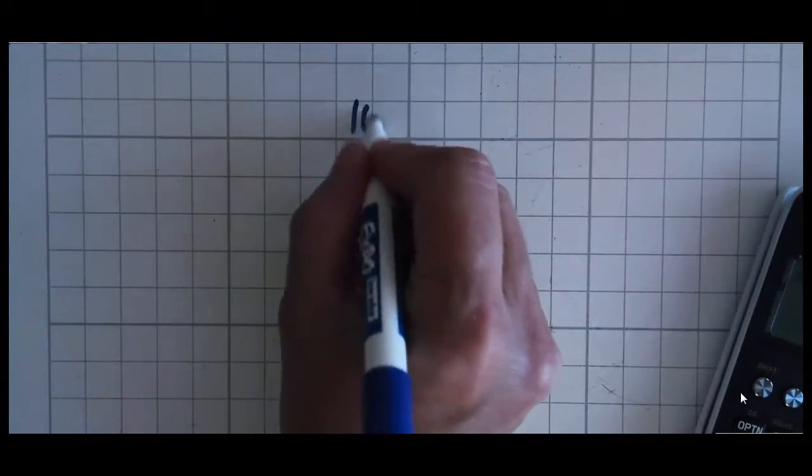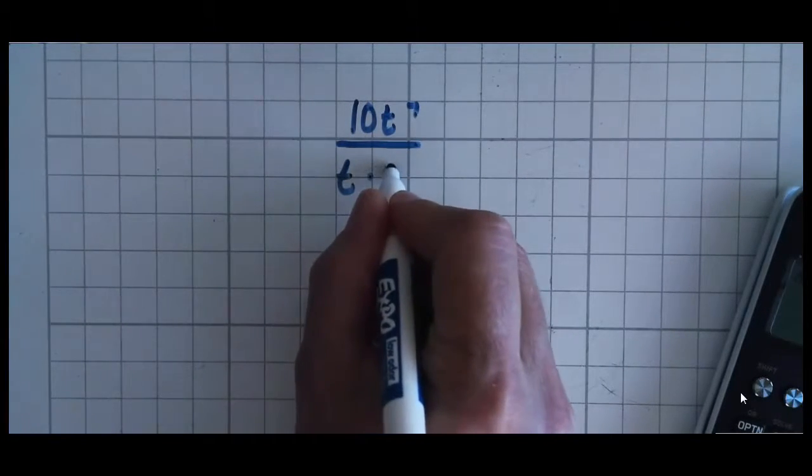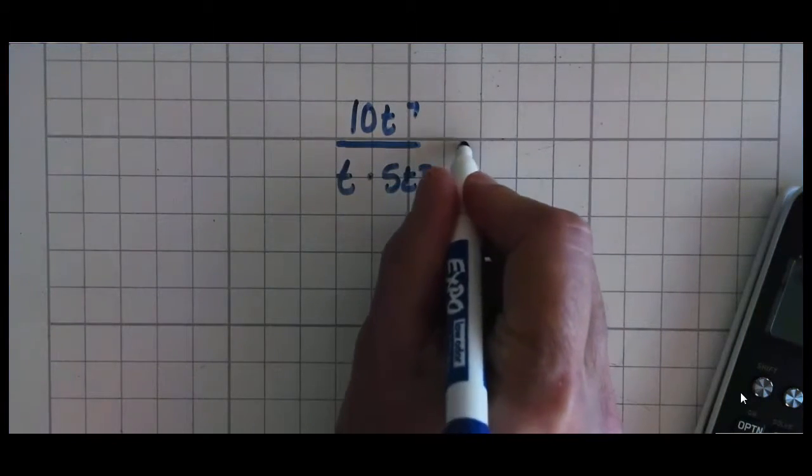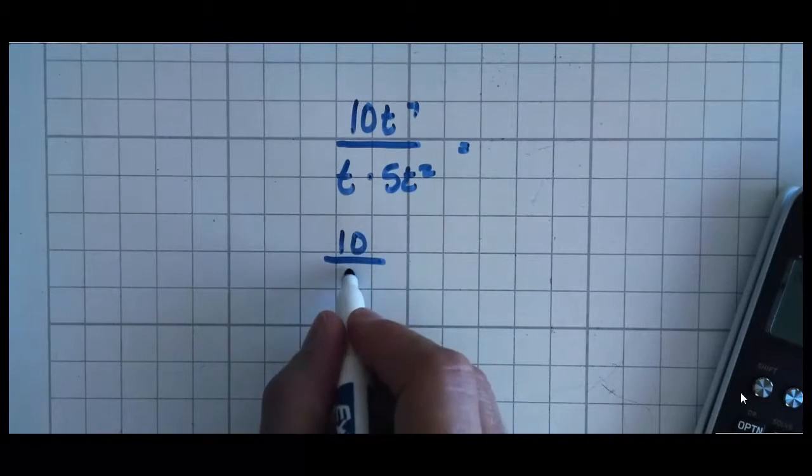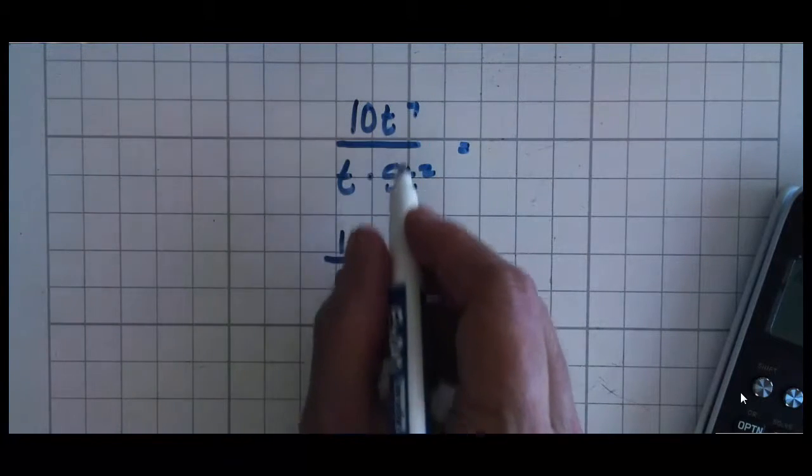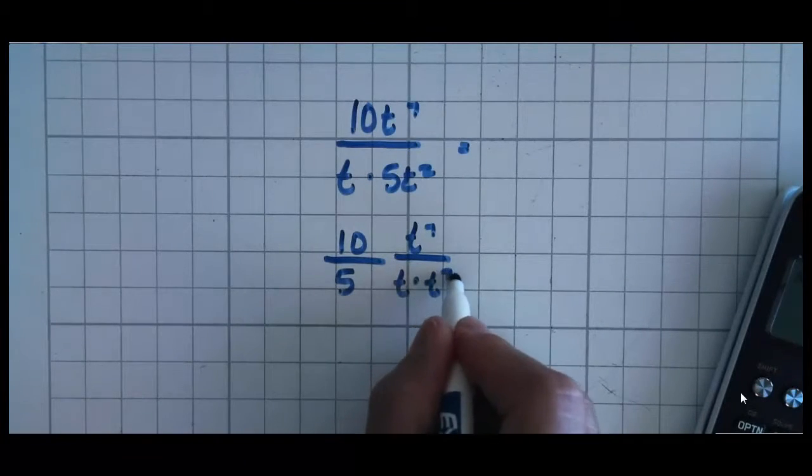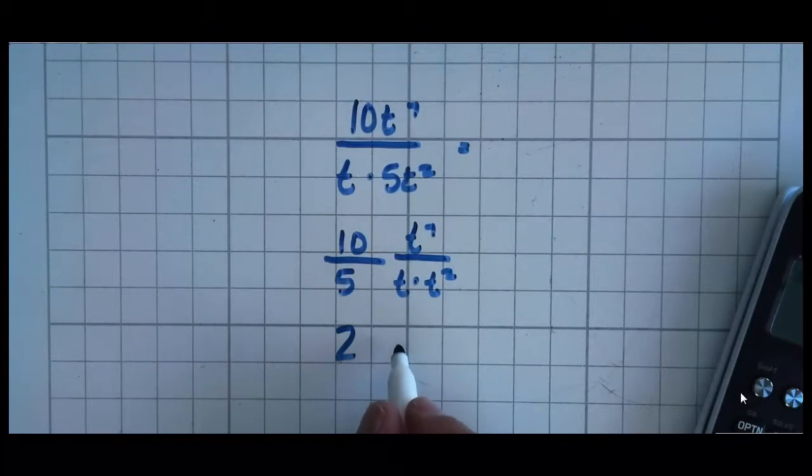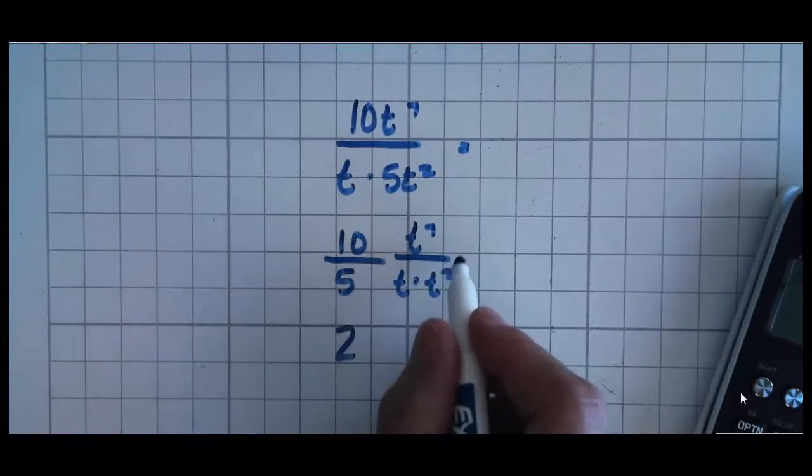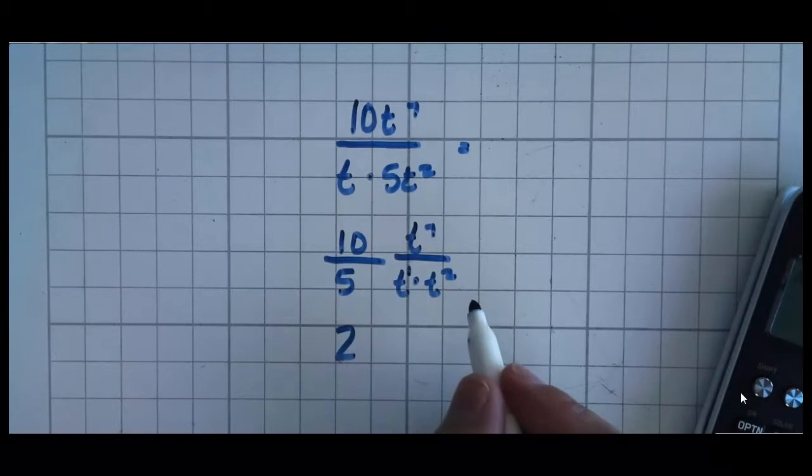Let's do a couple more. 10t to the 7th divided by t times 5t squared. So let's look at the numbers. We have 10 in the numerator and 1 times 5 in the denominator, which is just 5. And then my t's, I have t to the 7th in the numerator, t in the denominator, and t squared in the denominator. So if I look at this 10 and 5, I know that 10 divided by 5 is 2. Now let's look at this. I have 7t's in the numerator and 3t's in the denominator. Because remember, that's a 1.